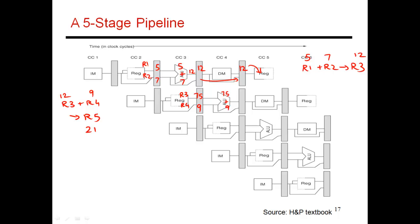Is there any way I could replace the 75 with a 12? The value 12 is actually sitting somewhere in my pipeline right now. So if I had been smart, I could have taken this value 12 and fed it into the ALU, ending up doing 12 plus 9.